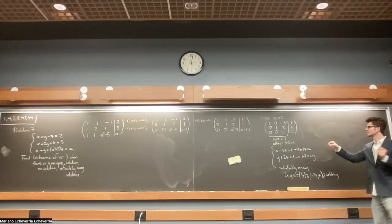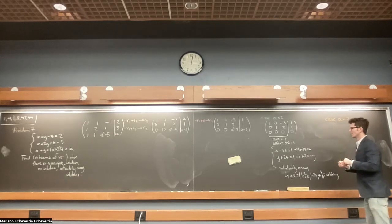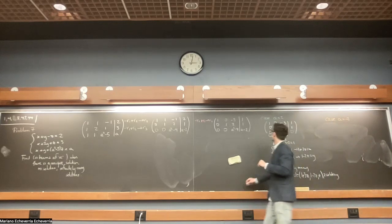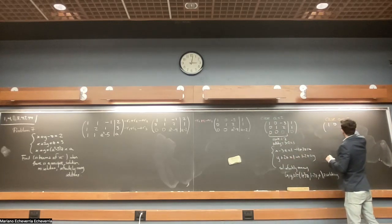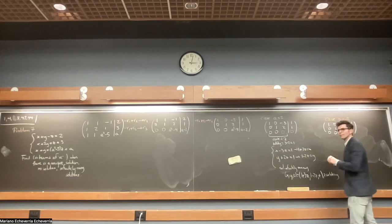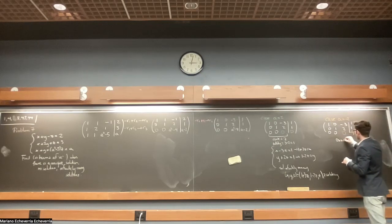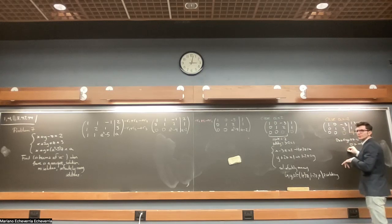For the case a equals negative 2, you plug it in and get: 1, 0, -3, 1; 0, 1, 2, 1; and 0, 0, 0, -4. There are no solutions because if you look at the last equation it says 0x + 0y + 0z = -4, or zero equals negative four, which is impossible.